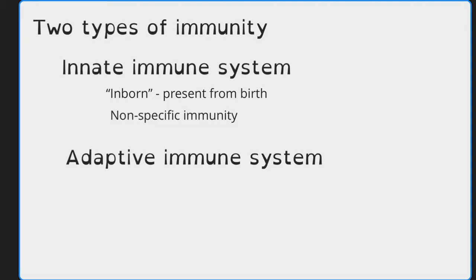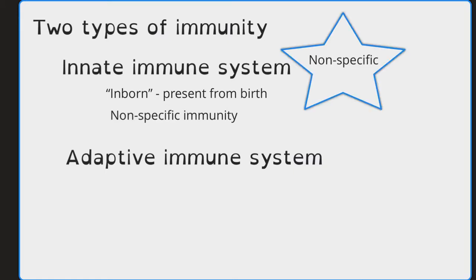None of these immune cells are specific — they are very nonspecific. The innate immune system is the system you're born with; it's a very nonspecific system and is basically your first line of defense that comes into play when something foreign enters the body.